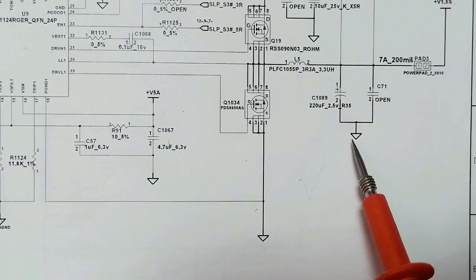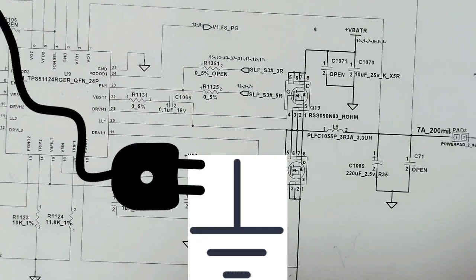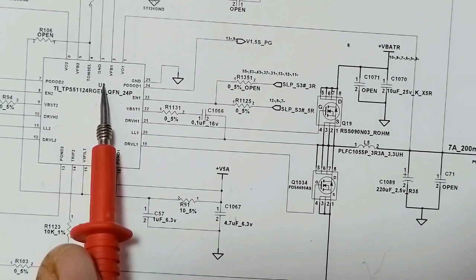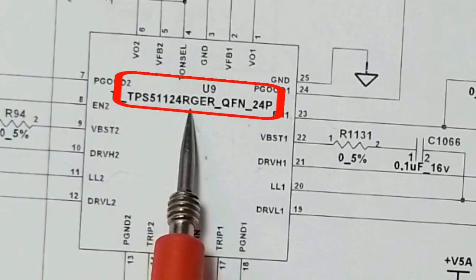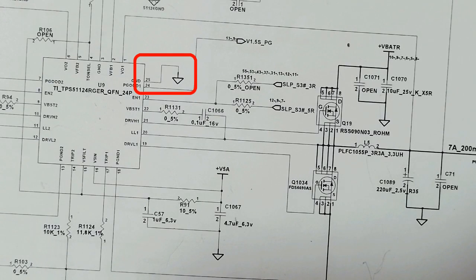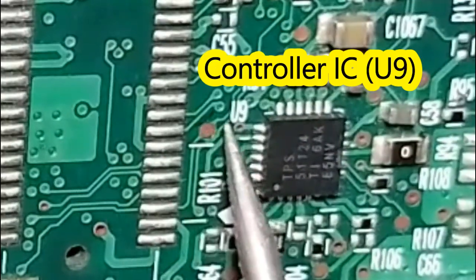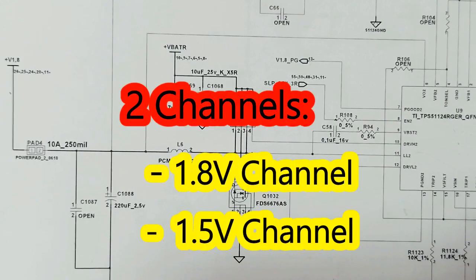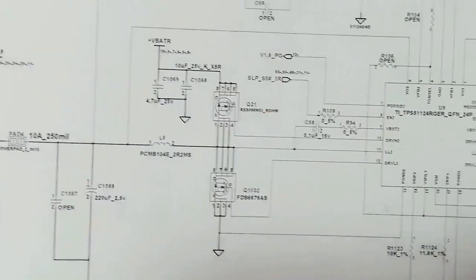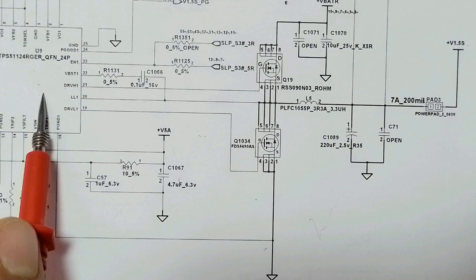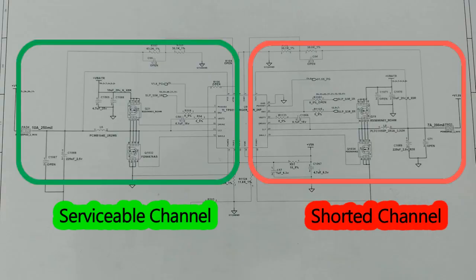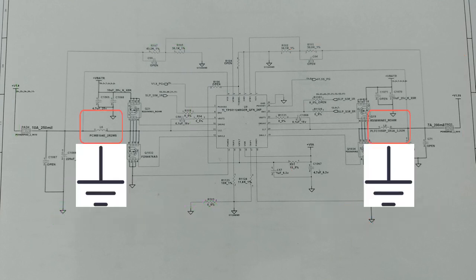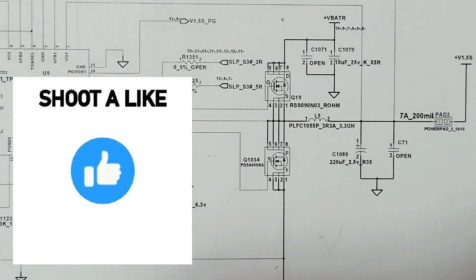Always when you get a short circuit, look for components that are connected directly to ground. The IC — tip is 51124 — could also be the shorted component because it is connected to ground. This is U9, the control IC, which controls L5 and L6. U9 controls two channels: the 1.8V channel and the 1.5V channel. But we get the short circuit in just one channel, not both. This means the IC is likely not shorted — if it were, both channels would be shorted. So the IC is not the shorted component.